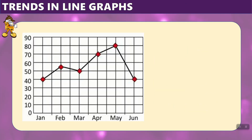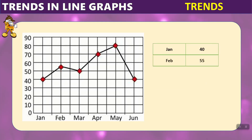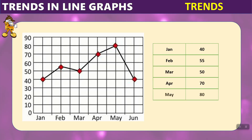This graph shows a trend from January till June. In January there were 40. In February there were 55, which is an upward trend. March is 50 — a little downward. April is 70, going up again. May is 80, going up again. And in June, trending back down to 40.